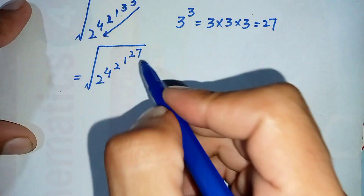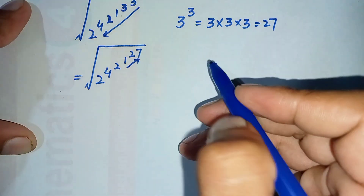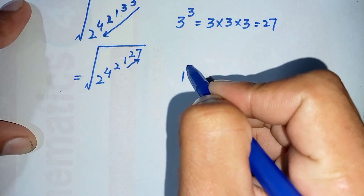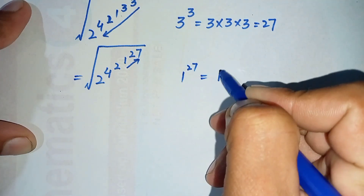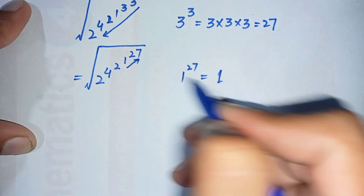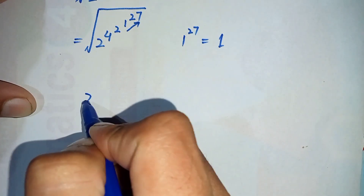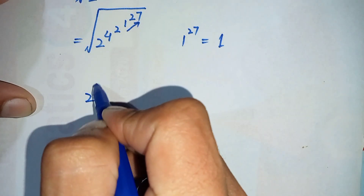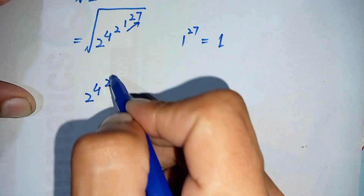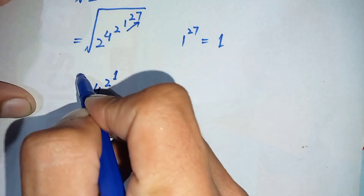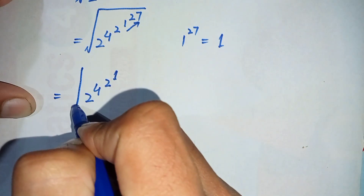And 1 raised to power 3 is equal to 1. In the next step we will simplify 1 raised to power 27. As we know, 1 raised to any power is always equal to 1, so we replace it with 1. The equation becomes the square root of 2 raised to power 4, raised to power 2, and 1 raised to power 27 equals 1.